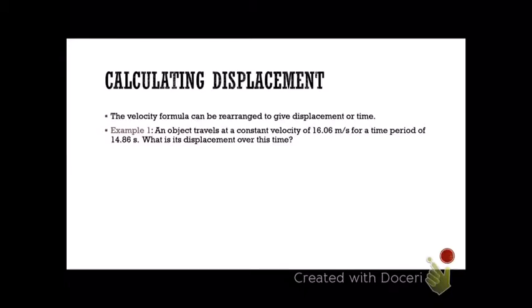Like we did using the speed formula to calculate distance, we can also calculate displacement using the velocity formula. Example one: an object travels at a constant velocity of 16.06 meters per second for a time period of 14.86 seconds. What is its displacement over this time?